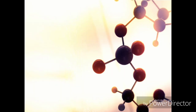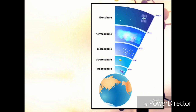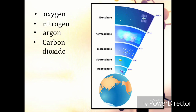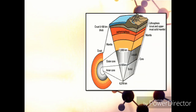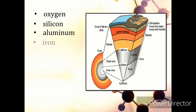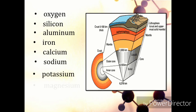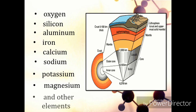Our planet's atmosphere is made up of various elements, namely oxygen, nitrogen, argon, carbon dioxide, and other elements. The earth's crust as well is made up of many other elements, such as oxygen, silicon, aluminum, iron, calcium, sodium, potassium, magnesium, and other elements.